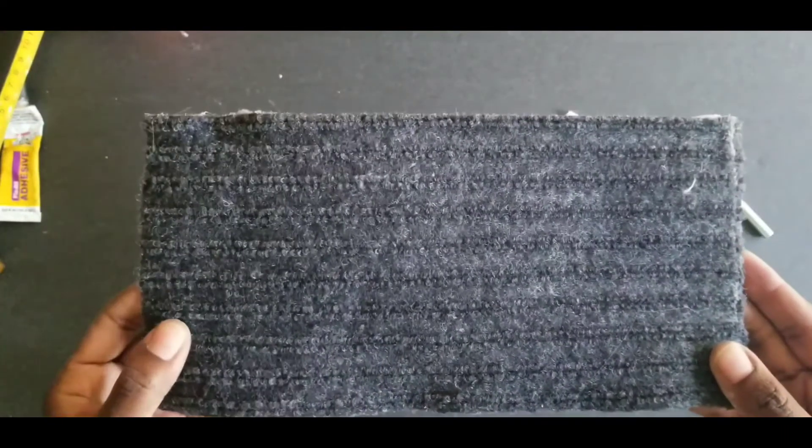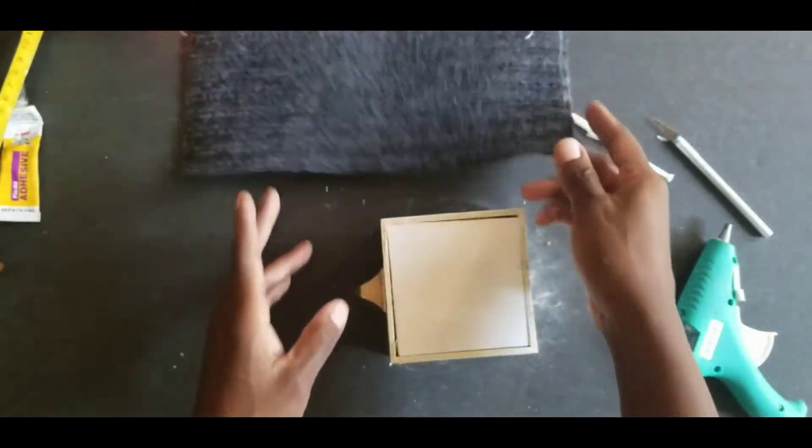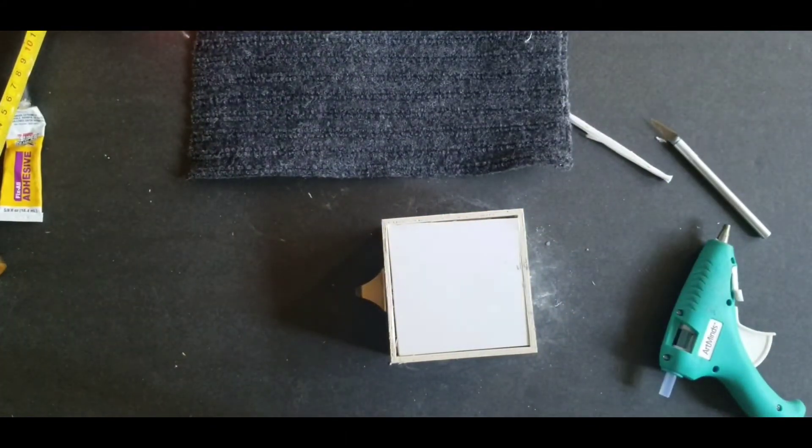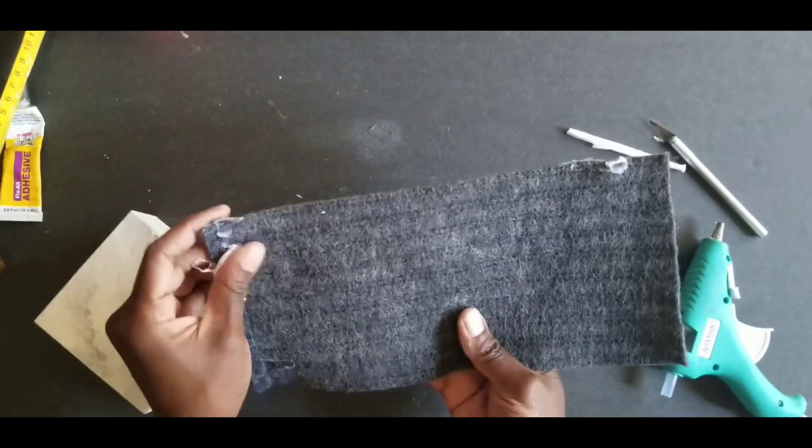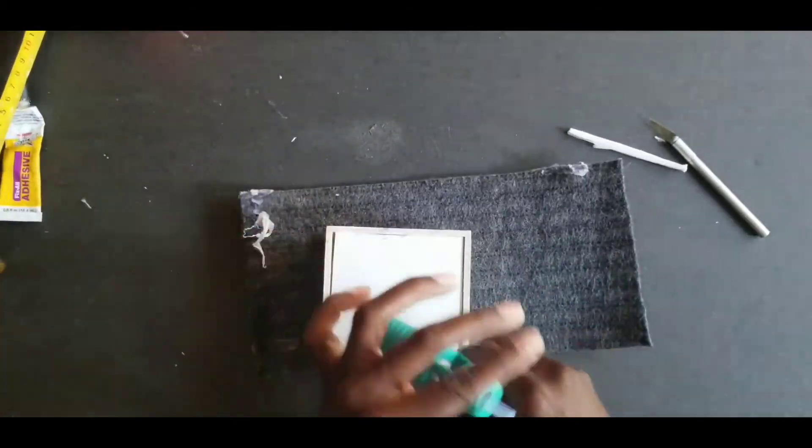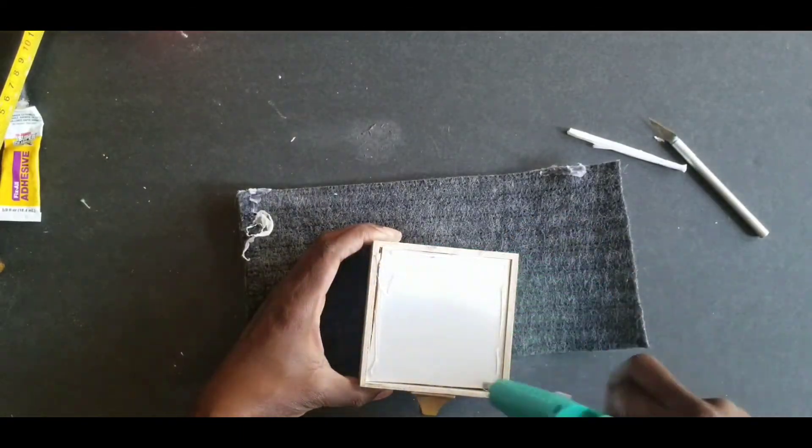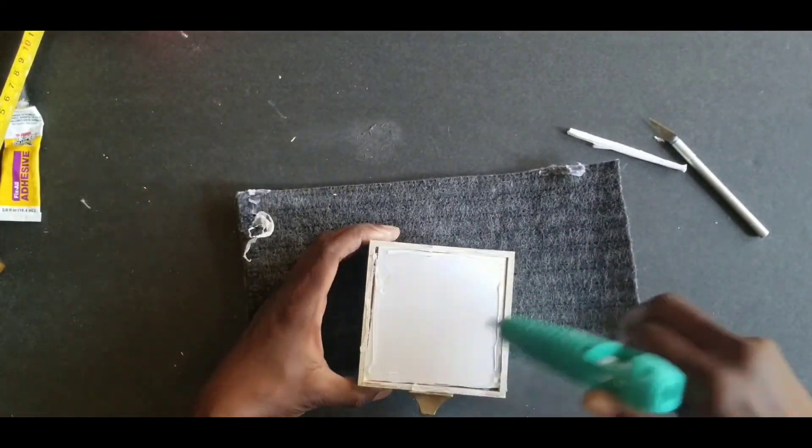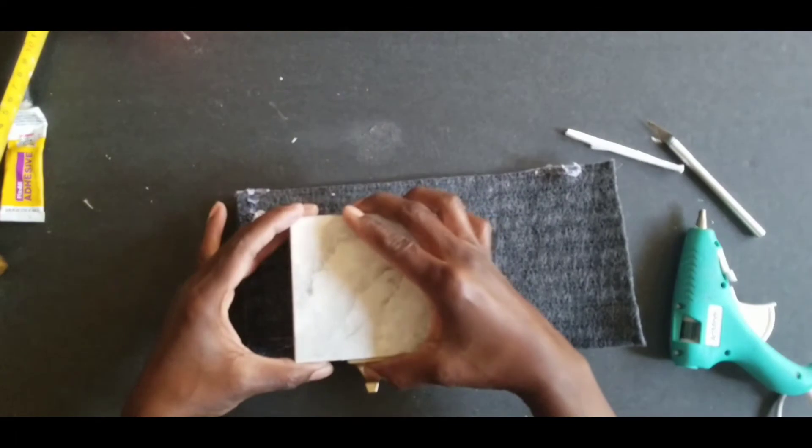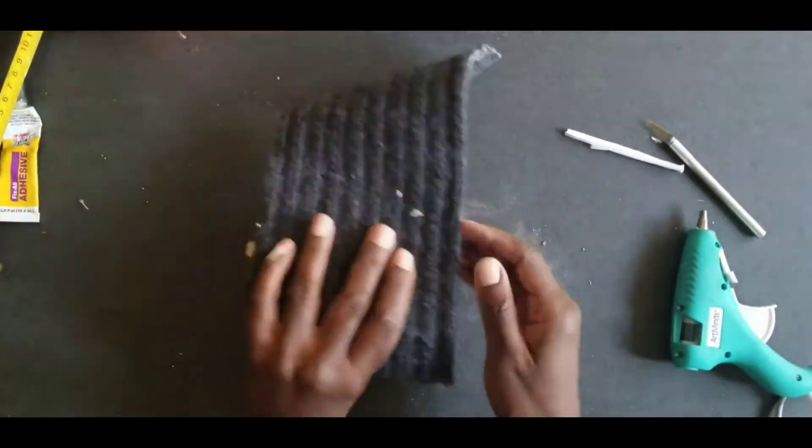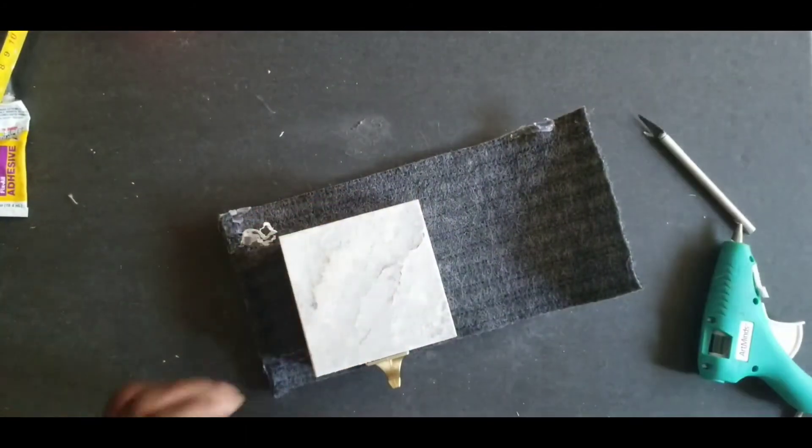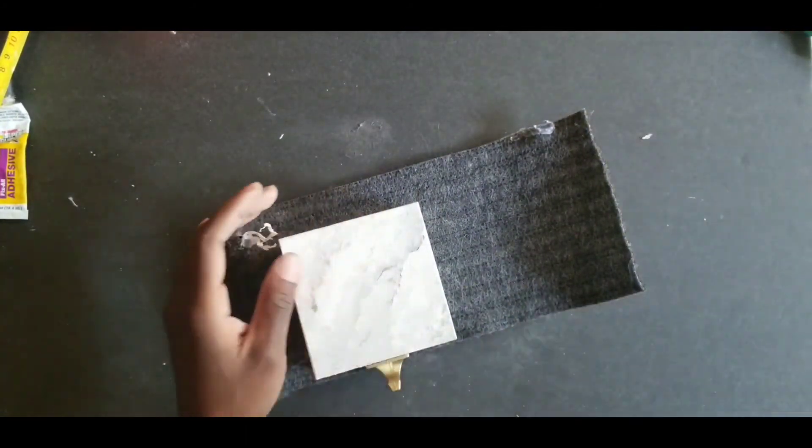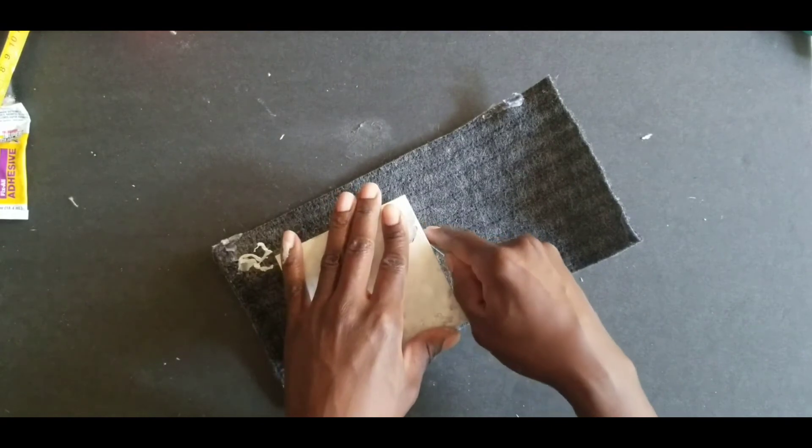And to finish off the bottom, I used a scrap piece of doormat, also from the Dollar Tree. And now you'll see why waiting to apply that hook is beneficial. Gluing the box on the doormat was pretty straightforward. I just used the lines on the doormat to line up the box, get it on there straight. And then I used an X-Acto knife to cut the excess doormat from around the box.